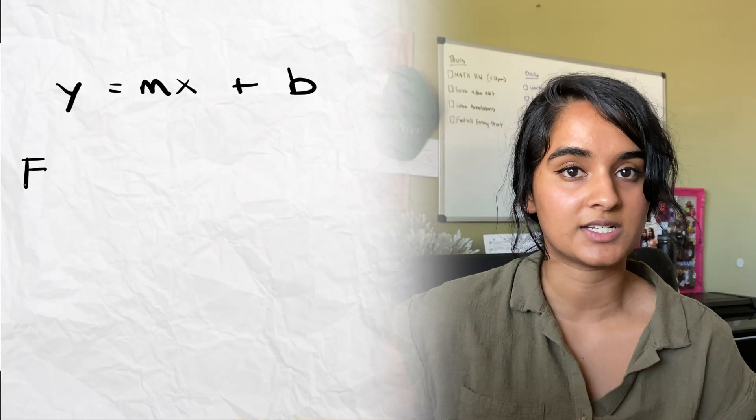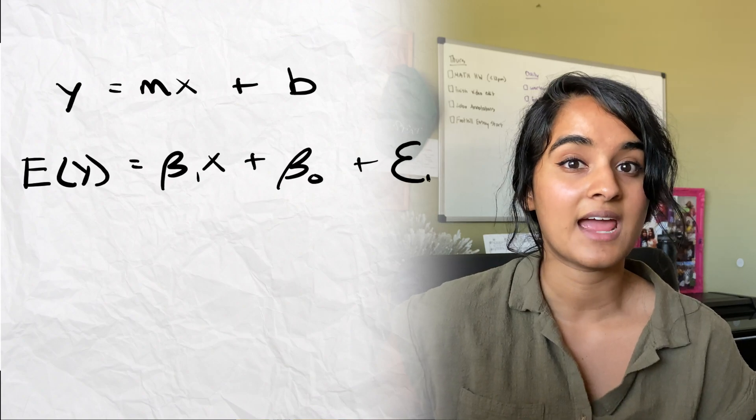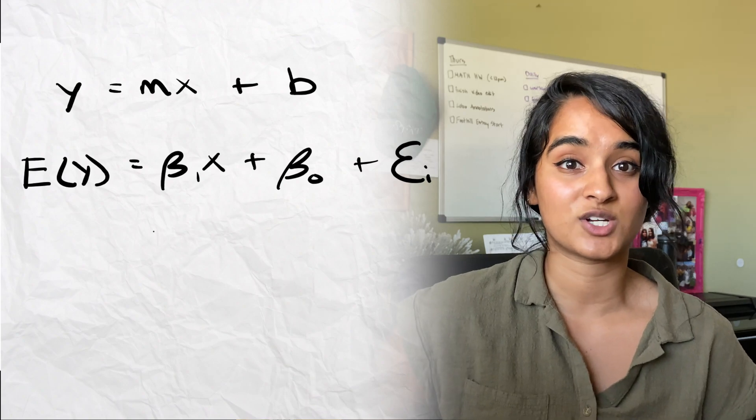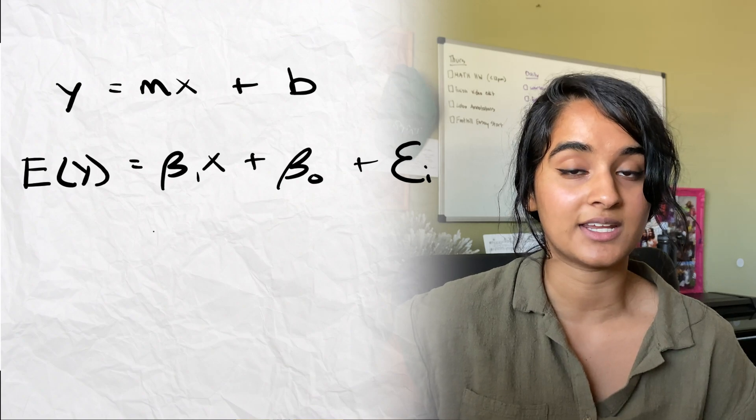The whole point of statistics is that we're using a sample in order to make inferences about the population. We're almost never going to be given information about the population, as it's really hard to get every single piece of data. So in this case, we're taking our sample from our study of the plant height and predicting the total plant height among the population. Our population regression line is going to be E(y) = beta_0 + beta_1*x + epsilon, where epsilon is the population residual. But we don't know what any of these population terms really are, because we don't have data about the population, so we're going to use a sample regression line to predict it.